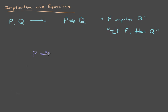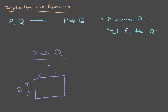Here is P implies Q. P has two possible values, true and false, and Q has two possible values, true and false. We're saying that if P is true, this forces Q to be true — it's impossible for Q to be false when P is true. The only time this statement is false is if Q is false and P is true. In all other circumstances, it's true.